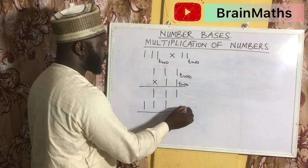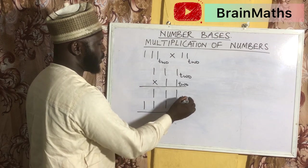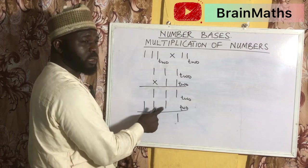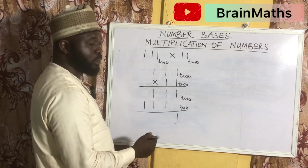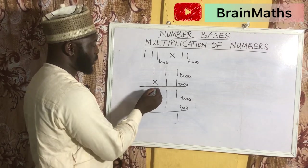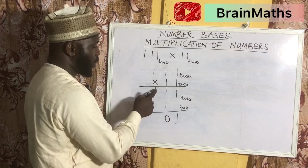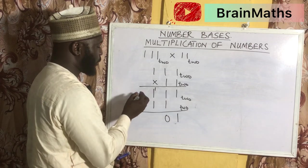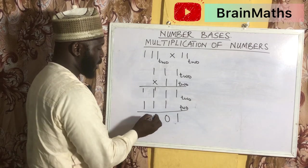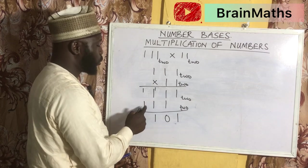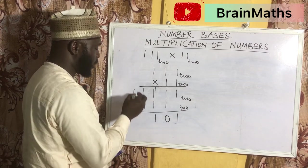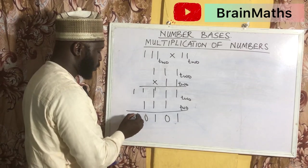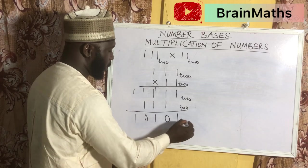We need to add these numbers together in base 2. 1 plus 0 gives 1. 1 plus 1 is 2 — how many 2s in 2? That is 1, remainder 0. 1 plus 1 is 2, plus 1 gives 3 — how many 2s in 3? That is 1, remainder 1. 1 plus 1 is 2 — how many 2s in 2? That is 1, remainder 0. The last column gives 1 plus 1 plus 0, which is 1. All in base 2.